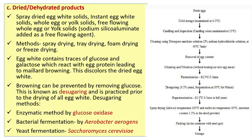Drying methods include spray drying, drum drying, foam drying, or freeze drying. Egg white contains traces of glucose and galactose which react with egg protein leading to Maillard browning reaction. This discolors the dried egg white. Browning can be prevented by removing glucose — this is known as desugaring.